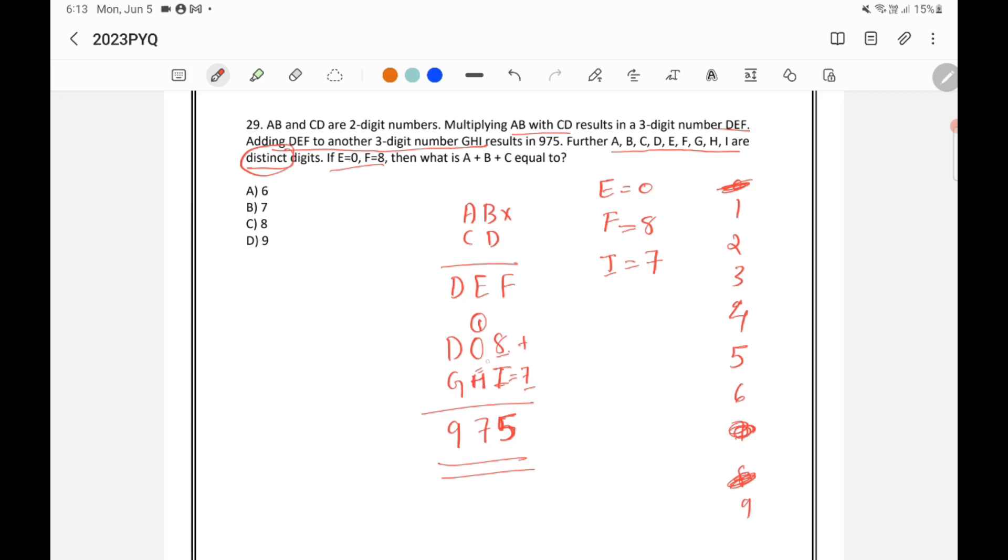Now similarly H has to be 6, then only 1 plus 6 will become 7 here. So H has to be 6. H is equal to 6. I am cancelling out 6 also.